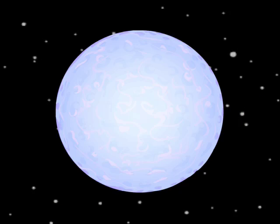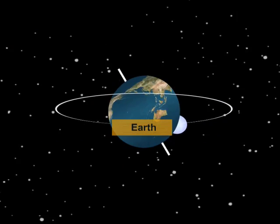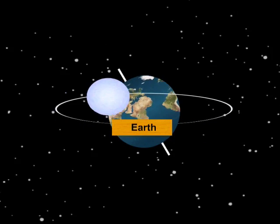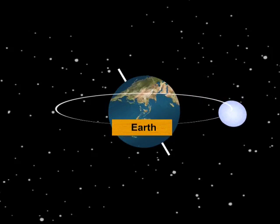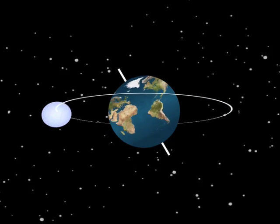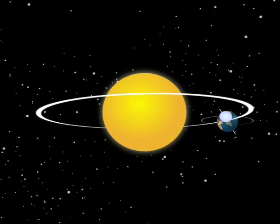What about the motion of the Moon? The Moon, like Earth, also does dual motion — it rotates around the Earth, and while the Earth revolves around the Sun, the Moon follows it.